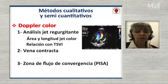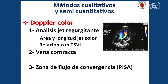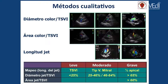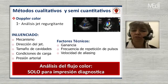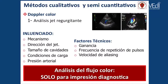Realizamos el análisis del Doppler color para evaluar el área, la longitud del jet color, su relación con el tracto de salida y el ventrículo izquierdo, y a continuación veremos la vena contracta y la zona de flujo de convergencia. La relación del flujo color con el tracto de salida son parámetros cualitativos únicamente. Es muy importante tener en cuenta que el análisis del flujo color solamente es para tener una impresión diagnóstica, no para determinar un diagnóstico definitivo, dado que está sujeto a muchos errores técnicos o de ganancia donde podemos sobreestimar o subestimar la gravedad.